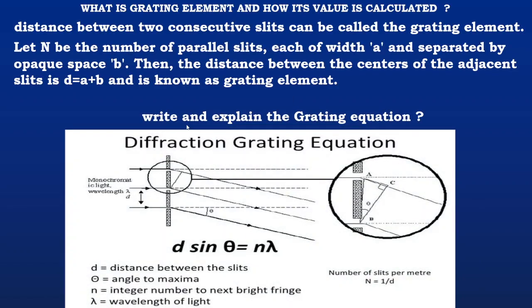What is grating element and how its value is calculated? The distance between two consecutive slits can be called the grating element. Let n be the number of parallel slits each of width a and separated by opaque space b. Then the distance between the centers of the adjacent slits is d, which is calculated by a plus b and is known as grating element.